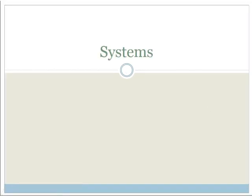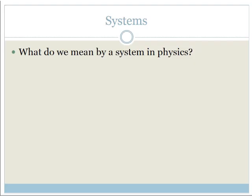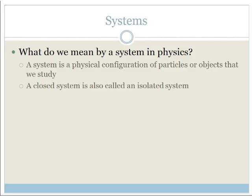In this lesson, we're going to be looking specifically at systems. So what do we mean by a system in physics? A system is a physical configuration of particles or objects that we study.